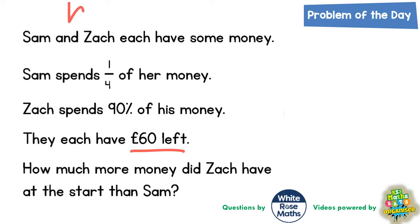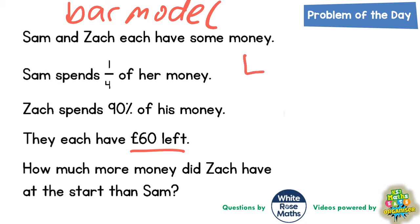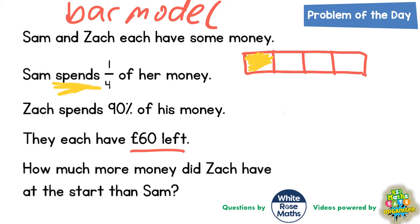We can answer this using a bar model. So let's think about it. Sam spends a quarter of her money, so the first thing we need to do is draw a bar which is split into quarters. She is spending a quarter, so we'll scribble out one of those four quarters. But it says she has £60 left, so the rest that she hasn't spent must add up to £60. There are three pieces left, so if those three pieces add up to £60 and we split £60 into three, each piece must be worth £20.